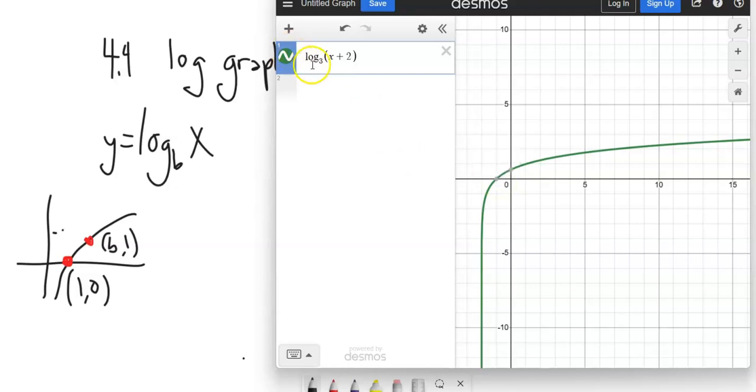And that point that would have been at (3,1) is now, if it got shifted back 2, is at (1,1). This is the point that would have been over at (3,1). So we can shift things left and right inside. Additionally, if we multiply by a negative number on the inside, it's going to affect the inputs. It's going to negate all the inputs. So notice what it does is it reflects it across the y-axis.